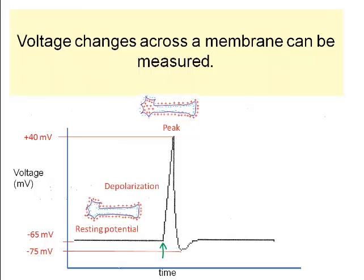If a stimulus causes the membrane to depolarize to a certain level called the threshold, the action potential occurs. Sodium gates open first and sodium flows down its concentration gradient into the neuron.